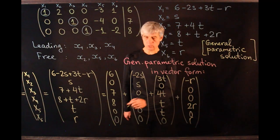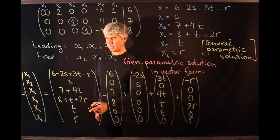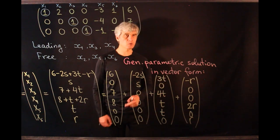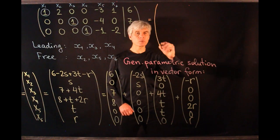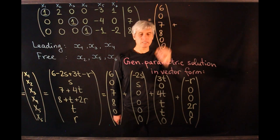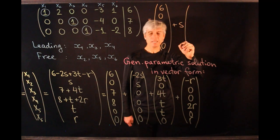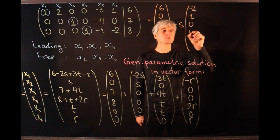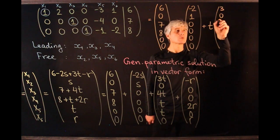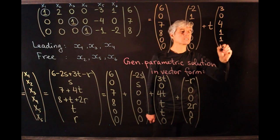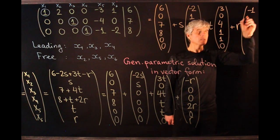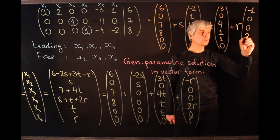Adding these four vectors gives precisely the vector corresponding to our general solution. The last step is to pull out the three parameters as common factors. We get: (6, 0, 7, 8, 0, 0) + s·(−2, 1, 0, 0, 0, 0) + t·(3, 0, 4, 1, 1, 0) + r·(−1, 0, 0, 2, 0, 1). This is the general parametric solution of a system of linear equations in vector form.